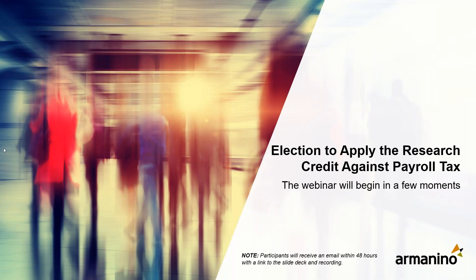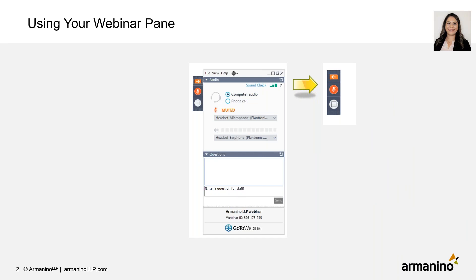Hello and good morning. Welcome to our webinar today on the election to apply the research credit against payroll tax. Before we get started, I want to take care of some housekeeping items. You can maximize or minimize the webinar pane using the red and orange arrow buttons. During the webinar, we encourage you to ask questions using the questions box in the webinar pane — type in your questions and click submit. Presenters will answer those questions at the end as time allows.